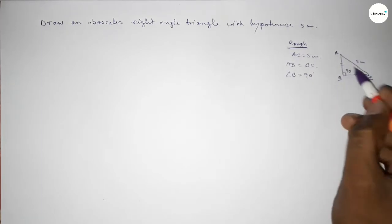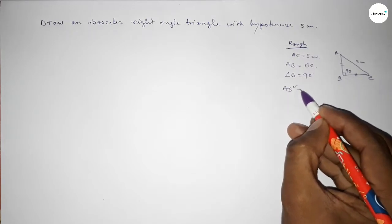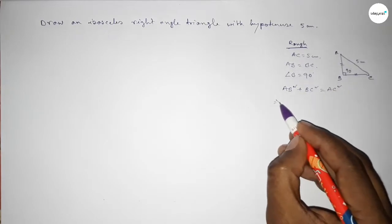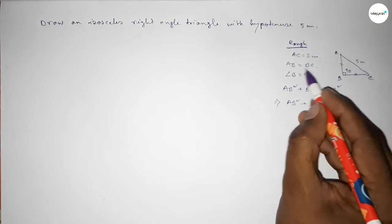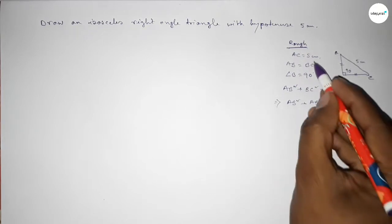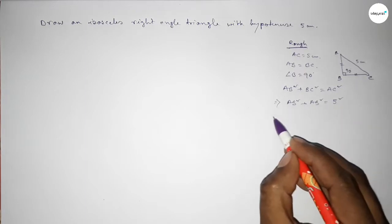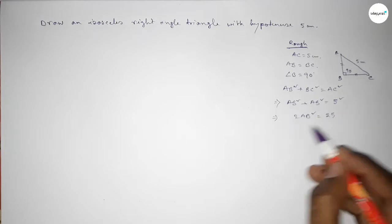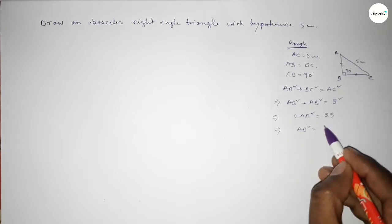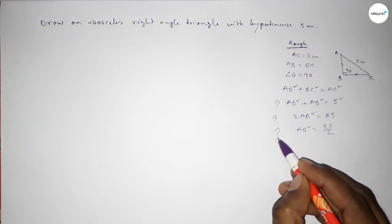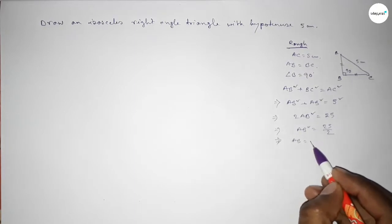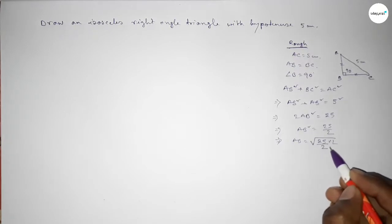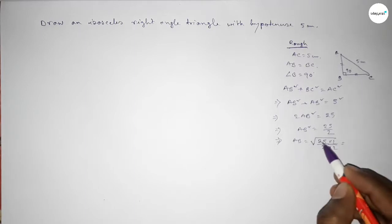So AB² + BC² = AC². Since AB equals BC, this gives us 2·AB² = 5², which implies 2·AB² = 25, so AB² = 25/2. Therefore AB = √(25/2), and to remove the square root from the denominator we multiply top and bottom by √2.